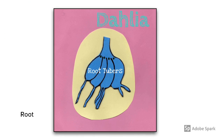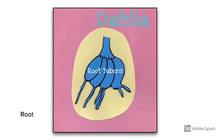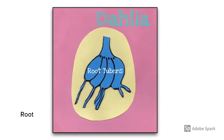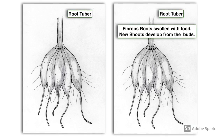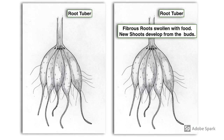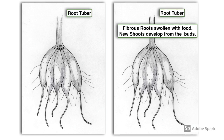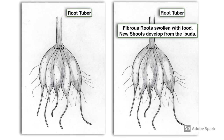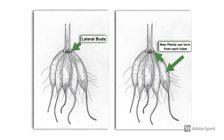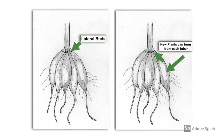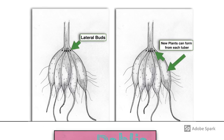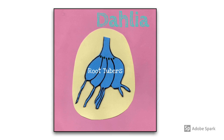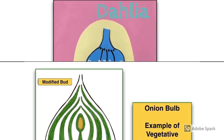The last example of natural vegetative propagation involving the root is the development of root tubers. Root tubers are roots that have become swollen with food, and associated with these swollen roots are lateral buds found at the base of the stem. Each swollen root has the potential to become a new plant, with shoots formed by those lateral buds. An example of a plant that produces root tubers is the dahlia.